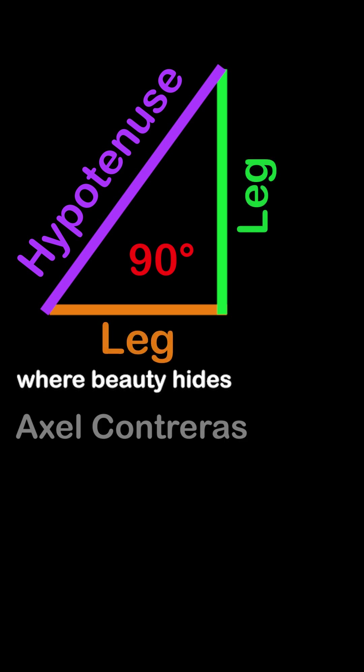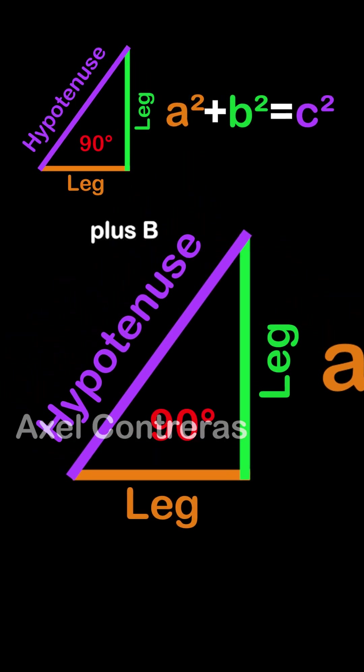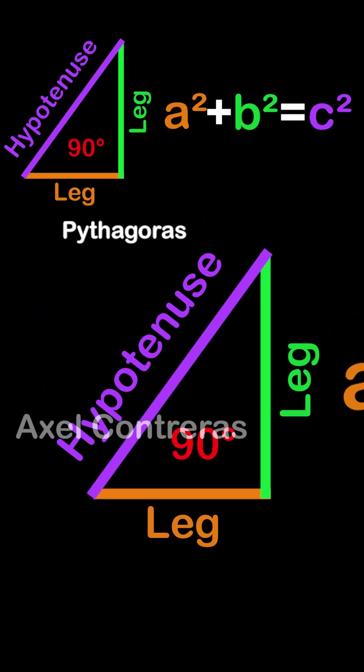Two legs protect where beauty hides. a² + b² = c². Pythagoras whispers his magic eclair.